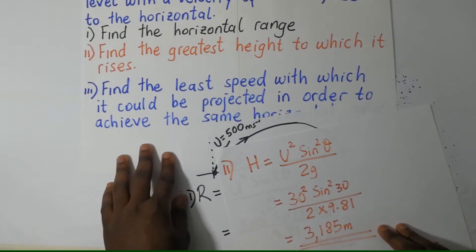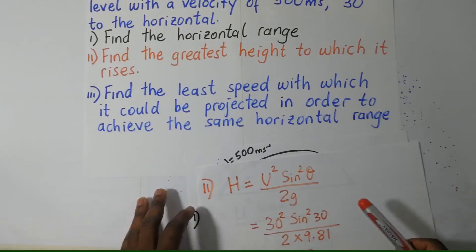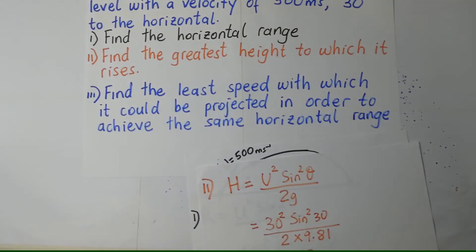Moving on to Roman 3, find the least speed with which it could be projected in order to achieve the same horizontal range.